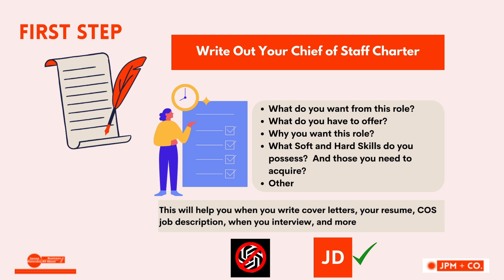Write down what you want from this role, what you offer to this role, why you want this role, and what soft and hard skills you already possess — as well as those you still need to acquire. Look at job descriptions and see what they're asking for. If there's a gap in what you have experience in, write that down so you're aware of it and can build a plan for acquiring that experience, knowledge, and skill set.